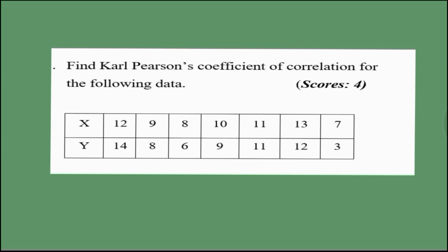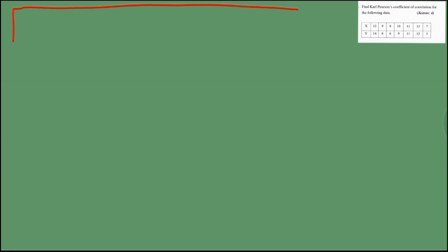Now we can find the solution of a question. We have two variables and we need to find the correlation coefficient. First, we prepare a 5-column table. It contains x, y, x², y², and xy.